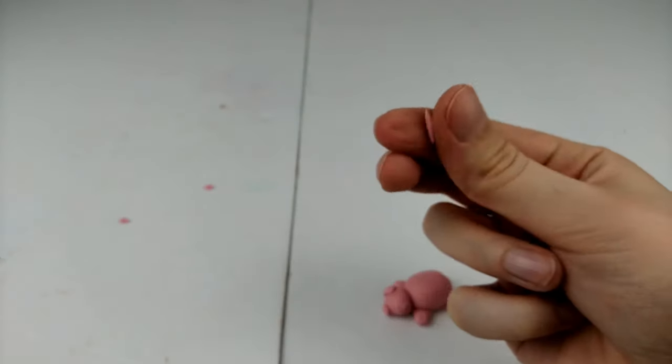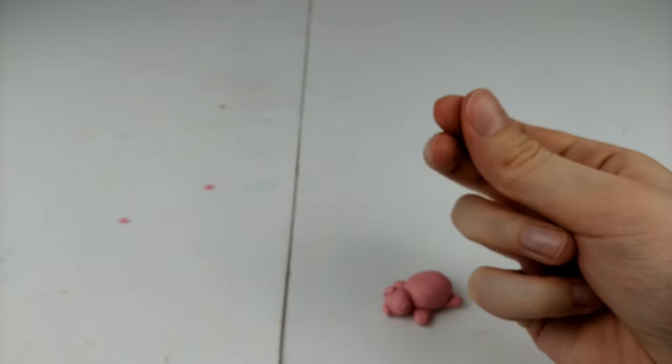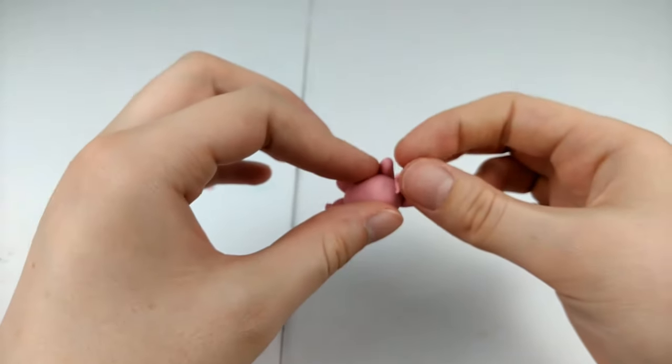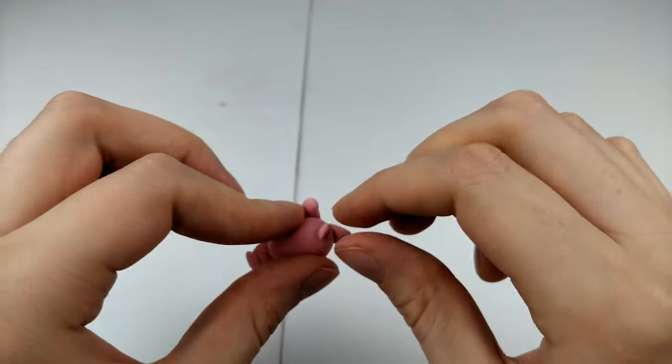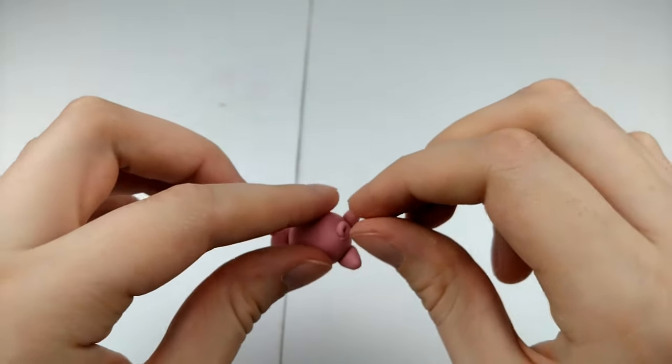For our pig's tail, just roll out a tiny piece of clay, attach it to the end and curl it as best you can.